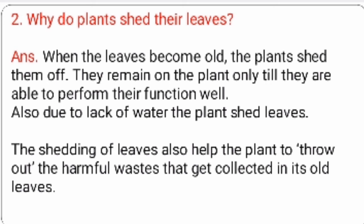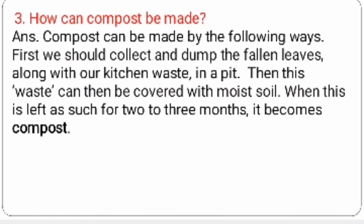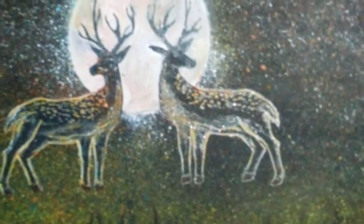The next question, third: how can compost be made? Compost can be made by the following ways: first, we should collect and dump the fallen leaves along with our kitchen waste in a pit. Then this waste can be covered with moist soil. When this is left as such for two or three months, it becomes compost. This is the process of how compost can be made.